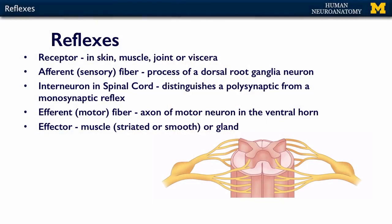So what do you need to have a reflex? First you need a receptor — something in your skin, your muscle, a joint, or even the viscera. We'll talk more about those visceral reflexes in the autonomic section, but you need some sort of a receptor. Then you need that dorsal root ganglion neuron that is the sensory neuron that receptor is attached to.